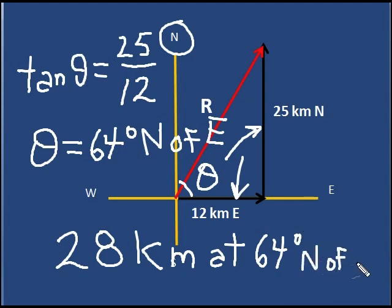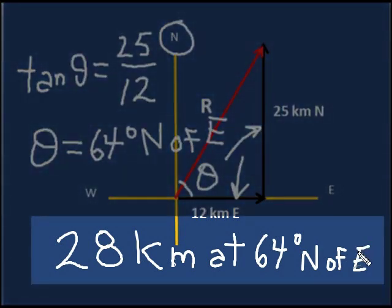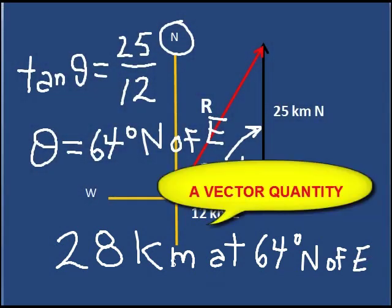Notice I have a magnitude and an angle. A direction. This is the vector quantity.